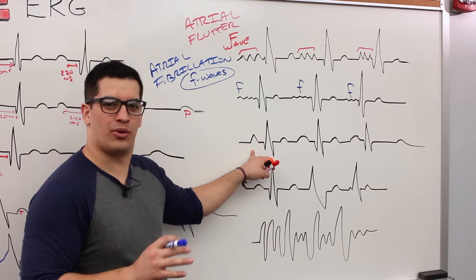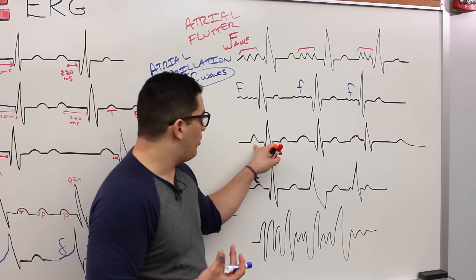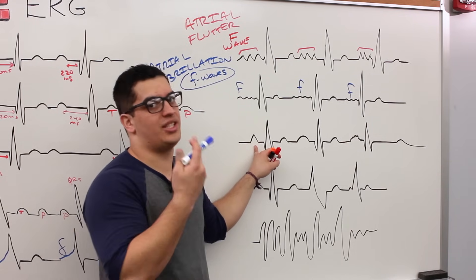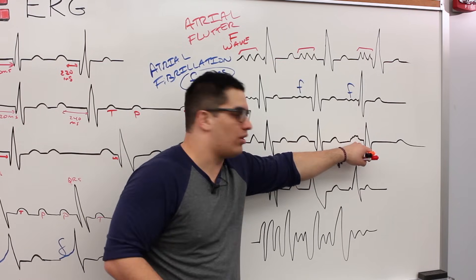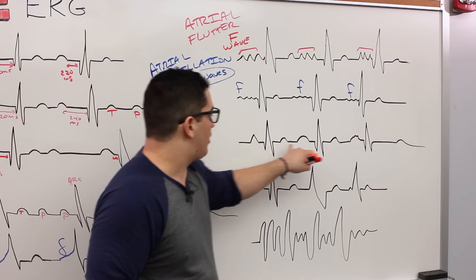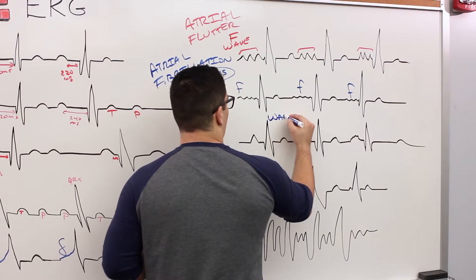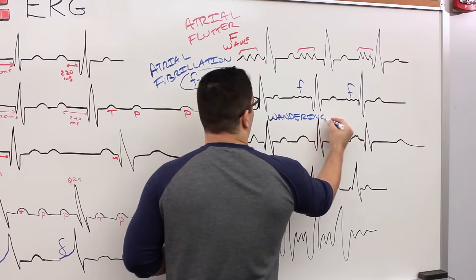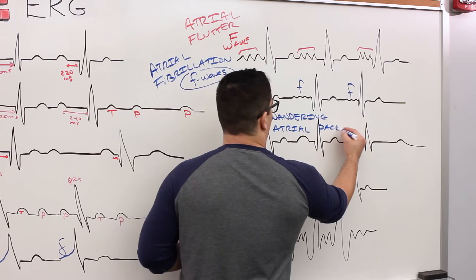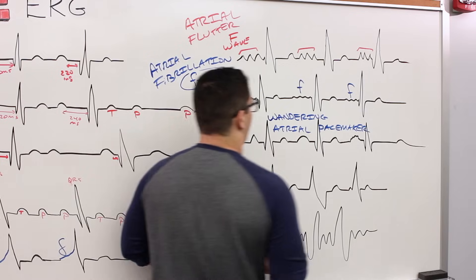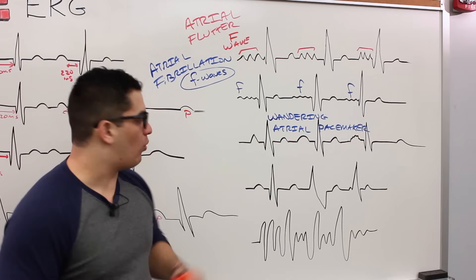This next abnormality is more common in individuals using drugs or experiencing drug overdoses. You'll notice that the P wave takes on at least three different morphological structures — one might look triangular, another looks normal, and another looks like a squiggle. Whenever you notice three different morphological P waves in sequence, it's referred to as a wandering atrial pacemaker.